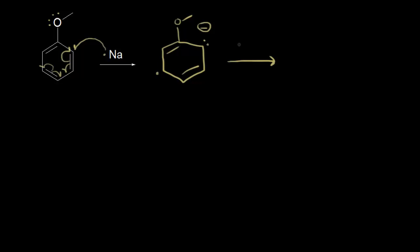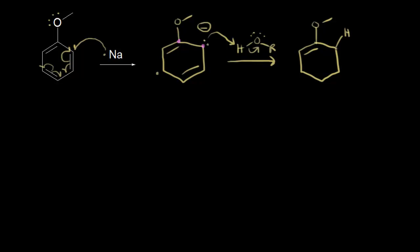Next is protonation. Our alcohol comes along, the carbanion functions as a base and picks up a proton. This is protonation in the ortho position — protonation occurs ortho to our methoxy group. There was already a hydrogen on that carbon, and we protonated, so now there are two hydrogens on that carbon. We still have a pi bond and our unpaired electron.